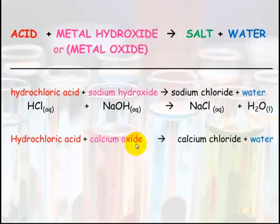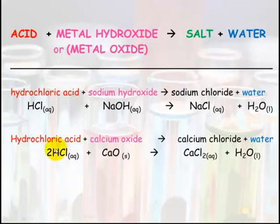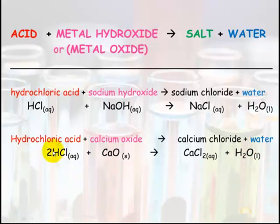Hydrochloric acid and calcium oxide will make calcium chloride plus water. You know they are going to make a salt plus water — here's your water — remove your two hydrogens and your oxygen. What's your salt that's left? Calcium plus chloride.